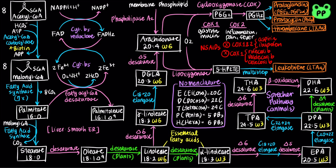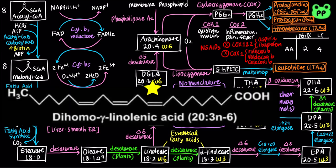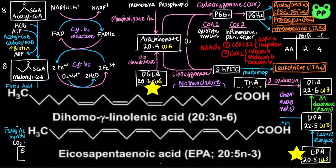Besides arachidonate, DGLA and EPA can also serve as precursors to eicosanoids. DGLA is a precursor to prostaglandin H1, prostacyclin 1, thromboxane A1, and leukotriene 3, while EPA is a precursor to prostaglandin H3, prostacyclin 3, thromboxane A3, and leukotriene 5.